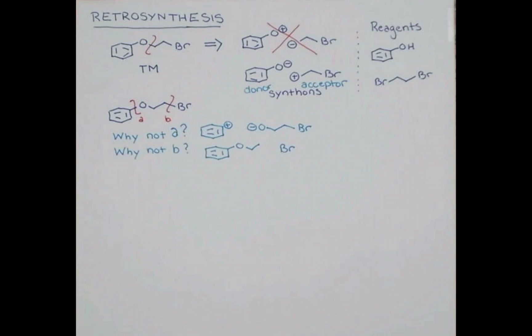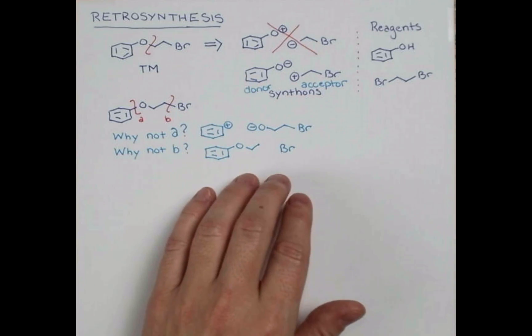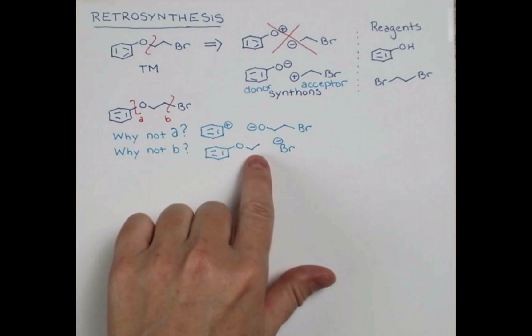Why not B? So we just broke the bond. We haven't put on our polarities yet. But bromine usually has a negative charge. Br minus is a good leaving group, a good nucleophile. So let's assign that polarity to this synthon. Now we need a positive charge here.